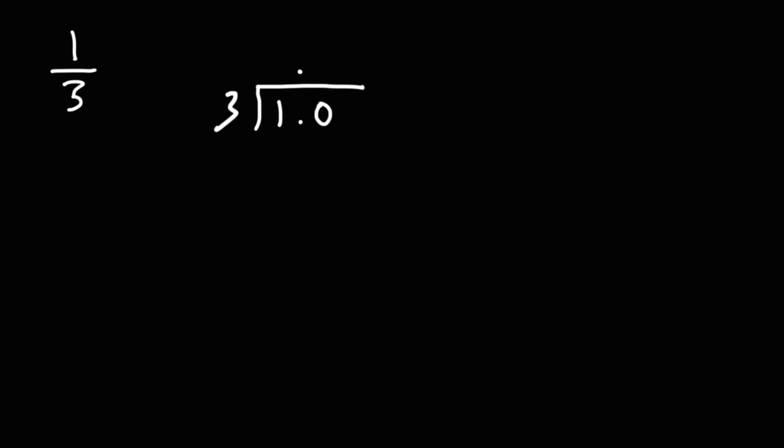How many times does 3 go into 10? If we make a list of the multiples of 3, this is what we have. So what is the highest multiple of 3 just under 10? That's going to be 9. So 3 goes into 10 three times.